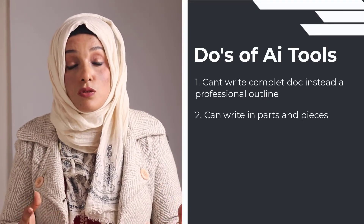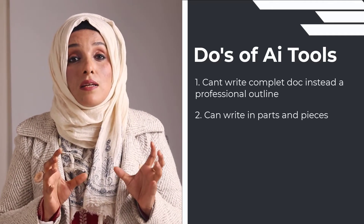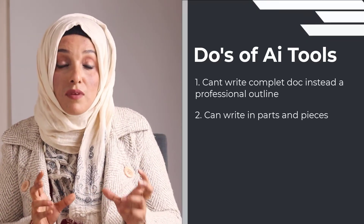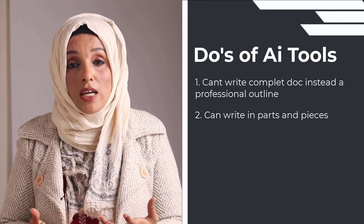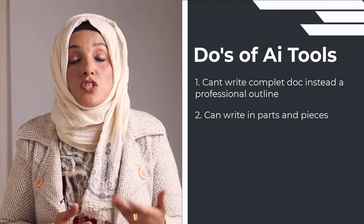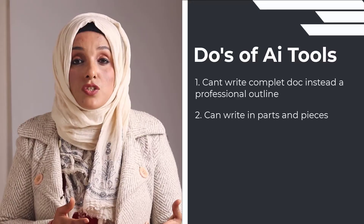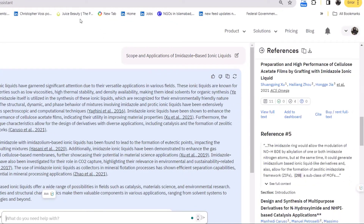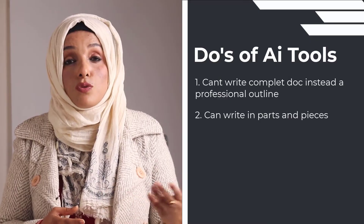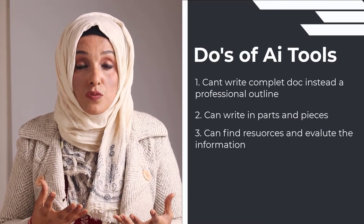You can write with the help of these AI tools, but in parts and pieces — in fractions. You can ask for any kind of information; for that purpose you can use Jenni AI or even Cite, which not only provides content but also a list of references that you can download and use later for reference management.